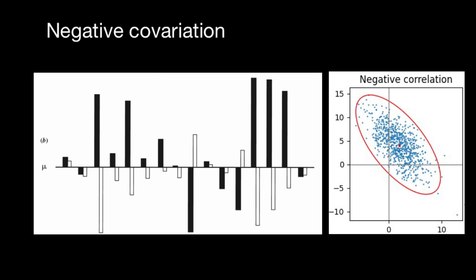And because larger deviations tend to be paired with larger deviations, and smaller deviations tend to be paired with smaller deviations, we can say that in this population, X and Y exhibit strong negative covariation.